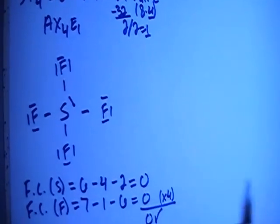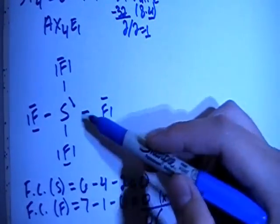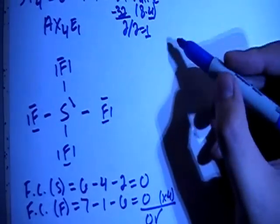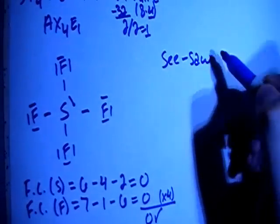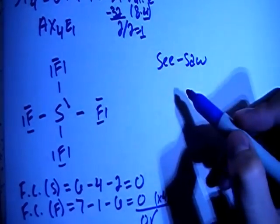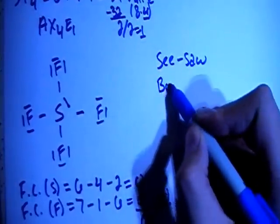Now let's talk about the shape. AX4E1—4 surrounding atoms and 1 non-bonding pair of electrons—is the seesaw shape. It's kind of hard to picture, but this is the information for it.